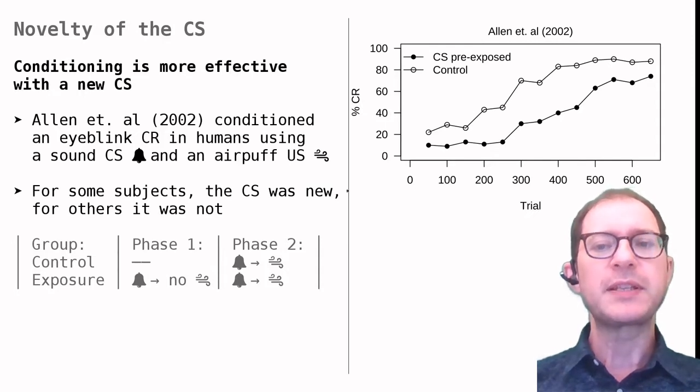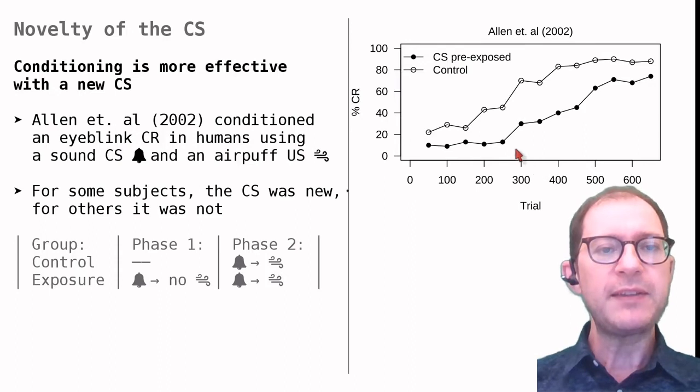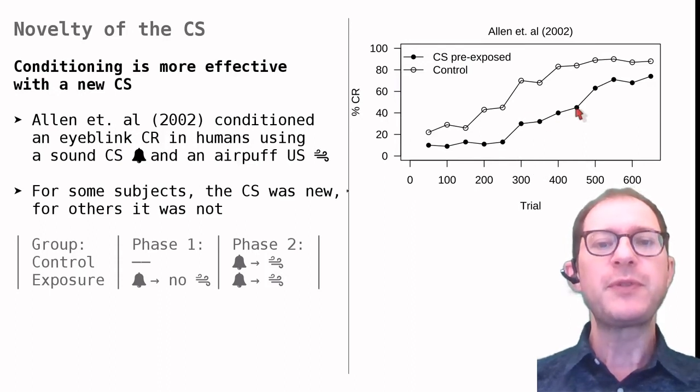As we can see in this graph, the exposure group learned more slowly than the control group. At any given point in the experiment, fewer rabbits in the exposure group blinked to the tone.